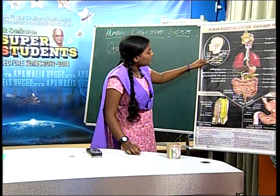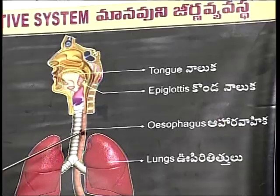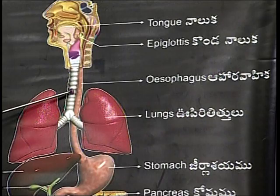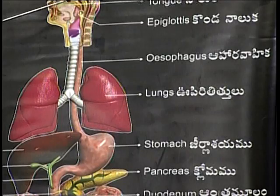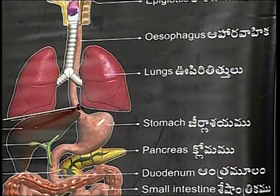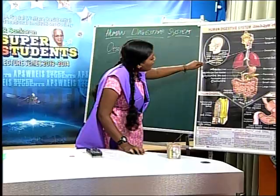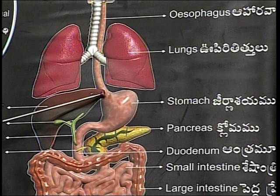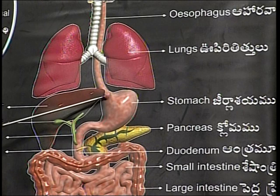The esophagus is a thin, long tube. It extends posteriorly through the neck, thorax and diaphragm. The esophagus opens into the stomach, and the opening is regulated by a cardiac sphincter.